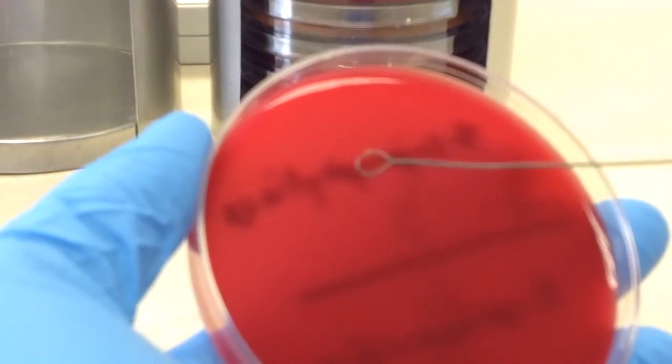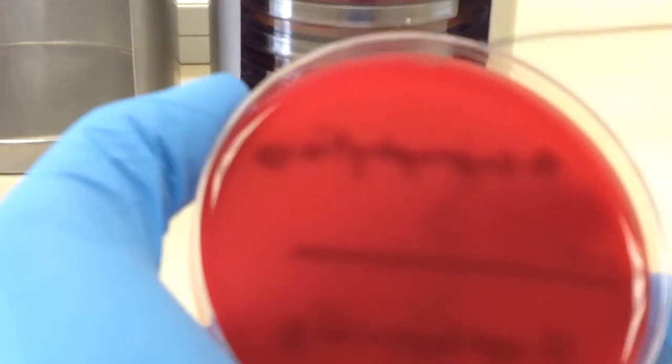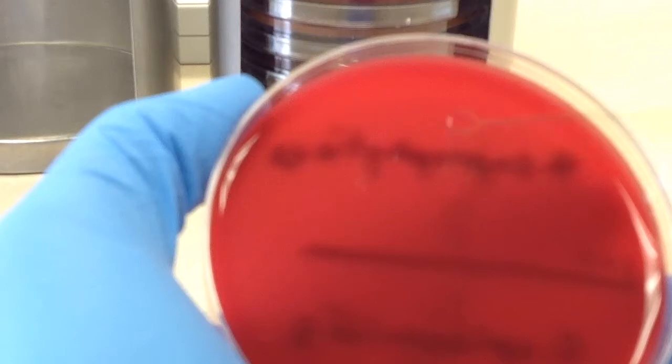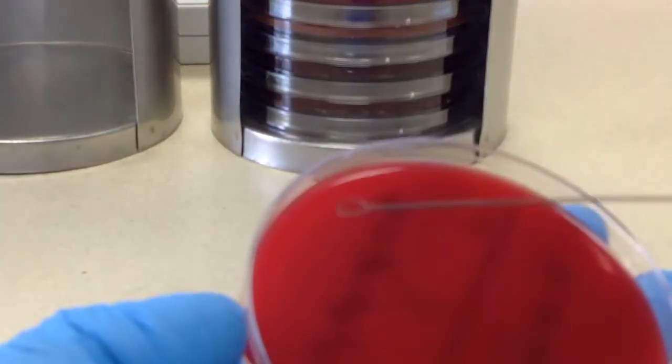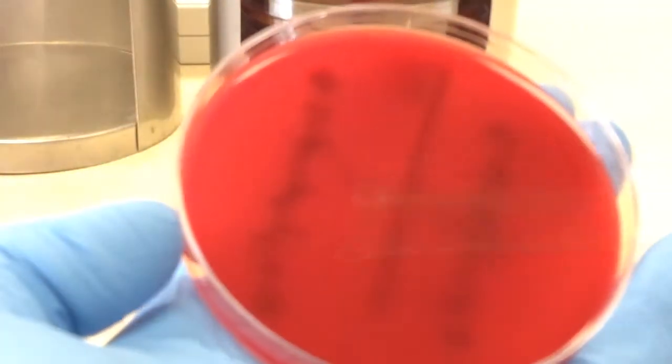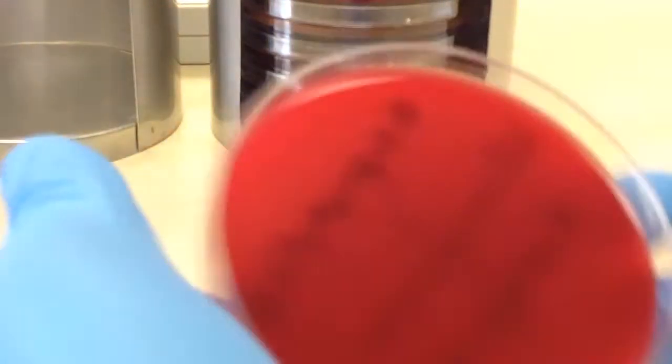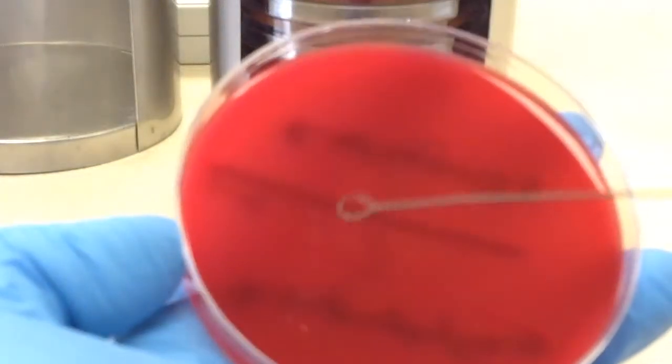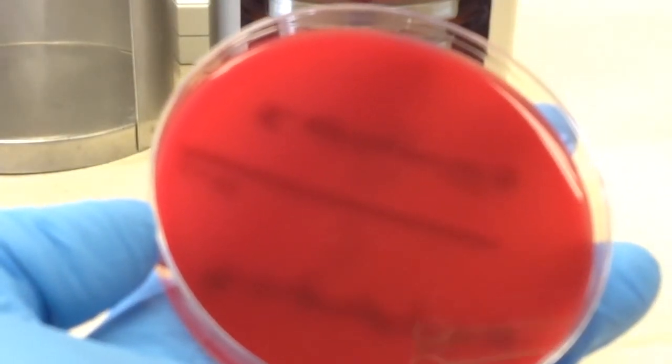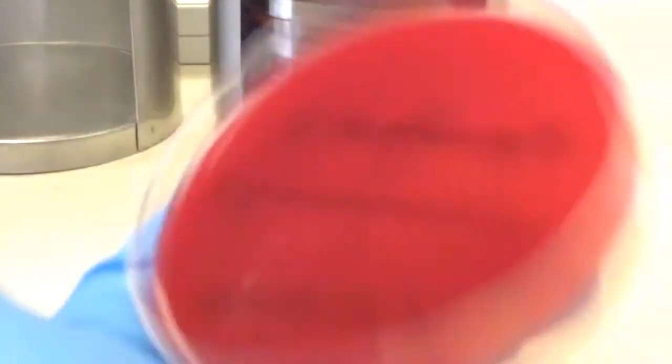I'm just simply going to put the organism onto the plate and then streak back and forth until I have a square that should have organism evenly distributed onto it.